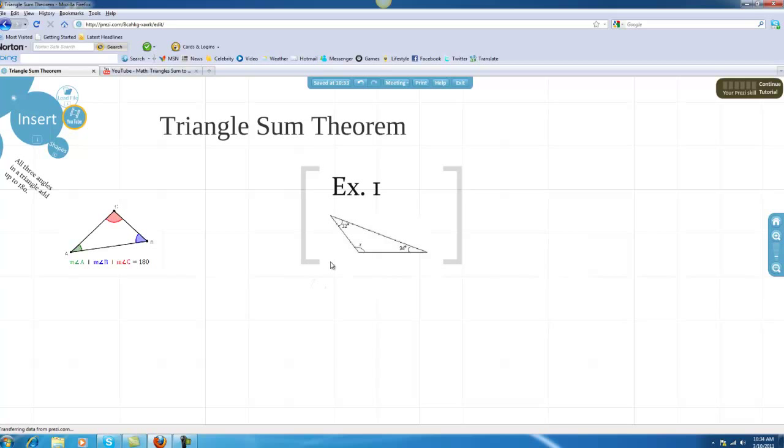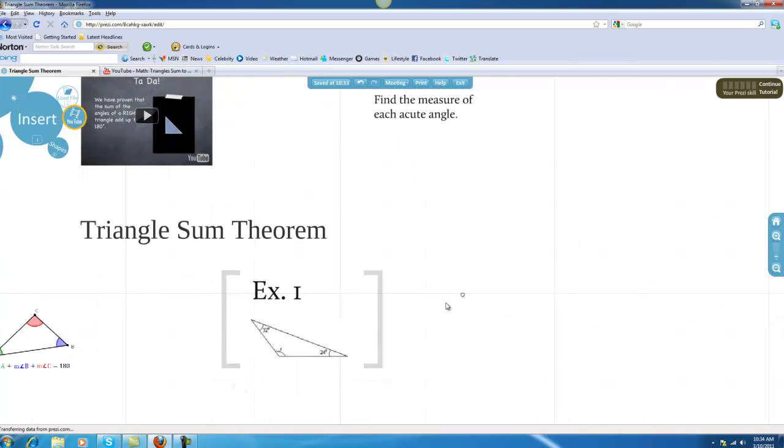Over here, I have my example one. I already have it done. If you notice, you probably can't see right now, but I have my equation and my answer over here, so I don't have to write it down. It's already there for students to see. They just can't see it right away, so they'll never know what's there until it actually shows up in the presentation, but they'll be able to see it.